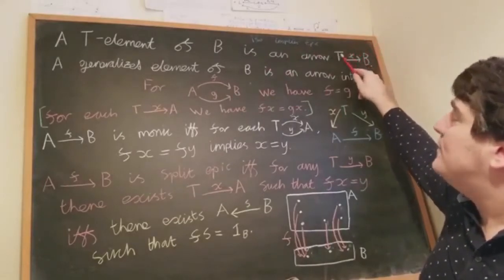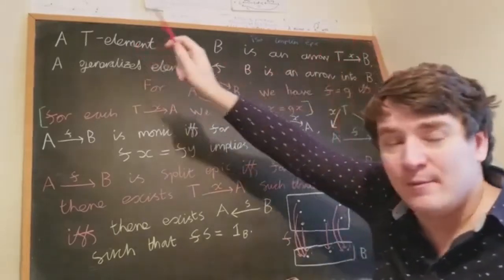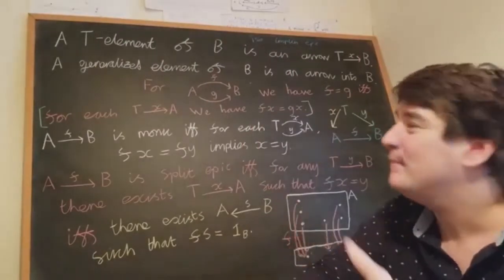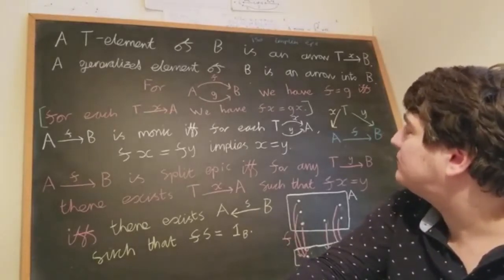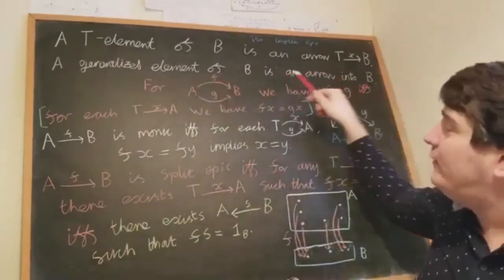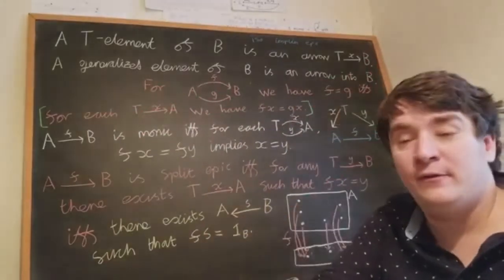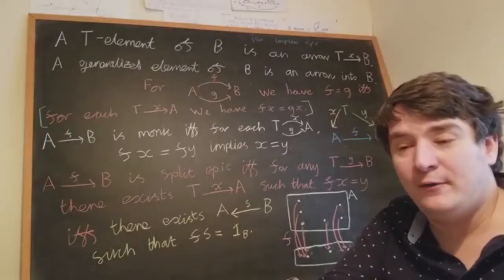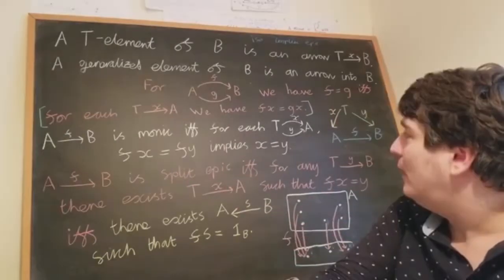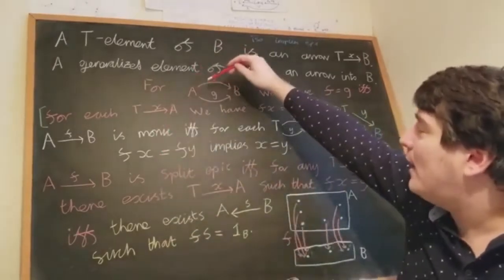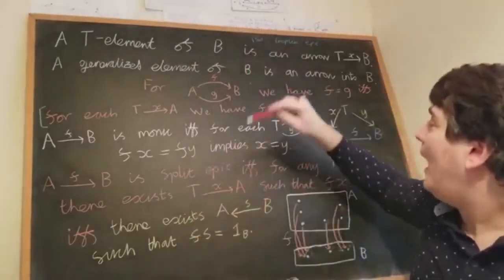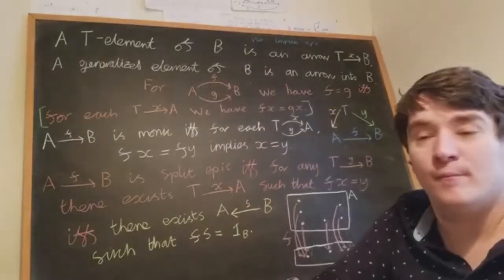The beauty of this idea is that we can get results that look much like set theory results about ordinary elements but now phrased in terms of generalized elements, helping us see parallels between set theory and general category theory. If an arrow x comes from an object t, we call x a t-element of b. The first result says that an arrow is characterized by how it operates on the generalized elements of its source: given parallel arrows f and g from a to b, how do we know if they are equal?